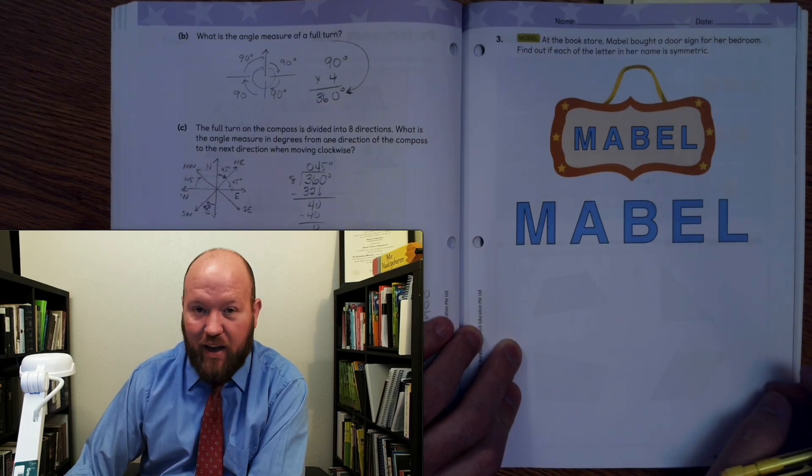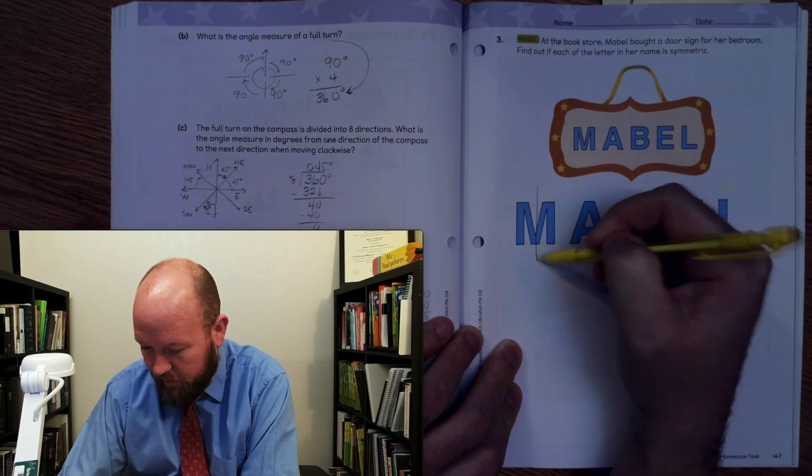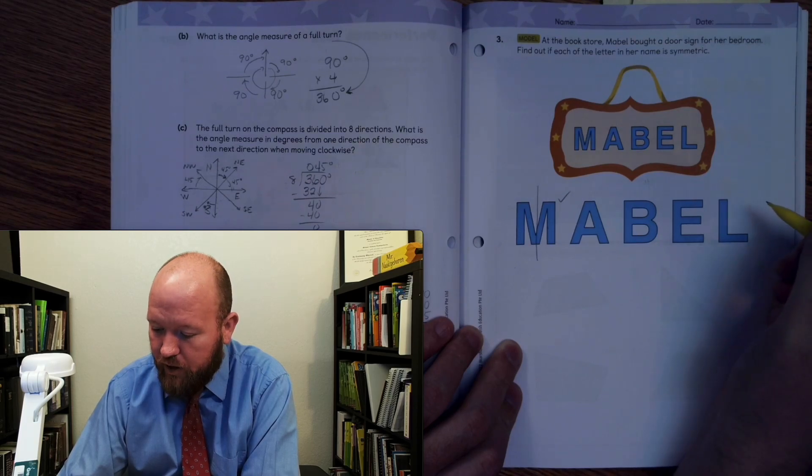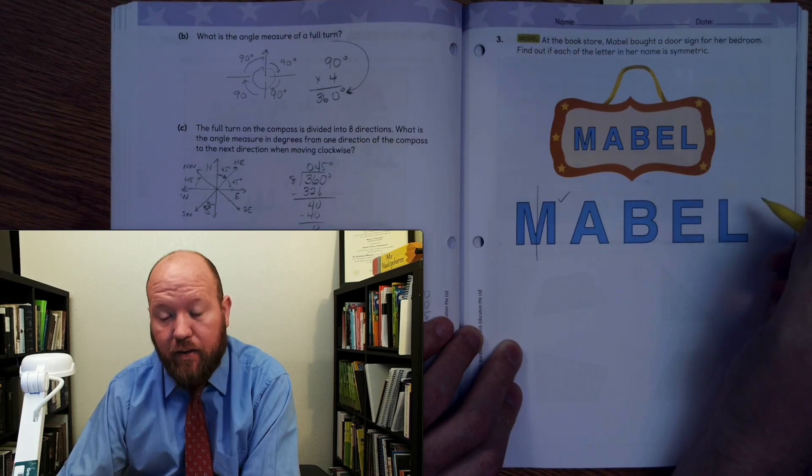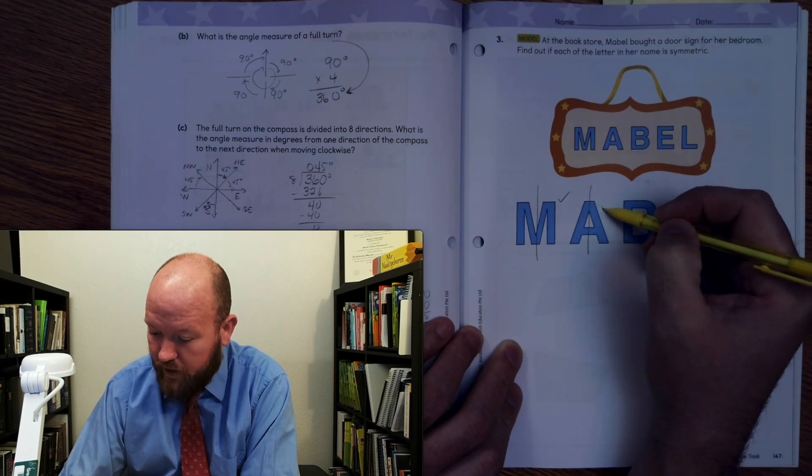All right. So how do we do this? All right. So with the M, how can we do it? Divide it like that. So yes, the M is good. What about the A? Can I divide the A? I can divide it just like that. So yes, the A is good.